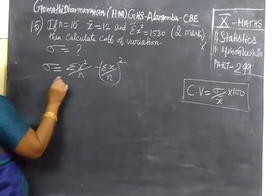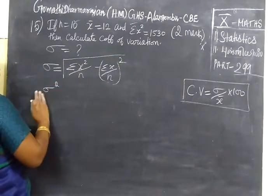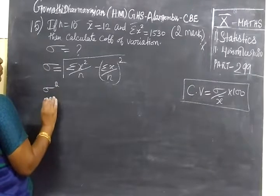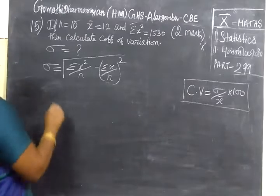This is under root. Then we have to find the variance of variation. Variance of variation. Then the root of this, we will cancel. This is the coefficient of variation. Okay, leave it, we directly will find it.